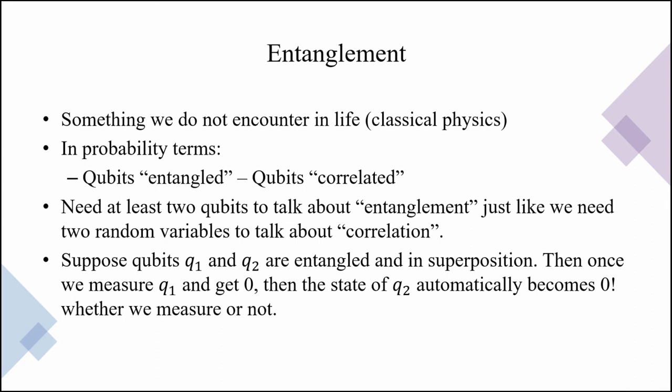I'd like to also mention about one particular peculiar behavior of quantum mechanics called entanglement. This is something we do not encounter in life because of the classical physics where objects are microscopic scale. In a nutshell, qubits are entangled means these qubits are correlated. So we need at least two qubits to talk about entanglement just like we need two random variables to talk about correlation. Suppose qubits q1 and q2 are entangled and they are in superposition. Then once we measure q1 and get zero, then the state of q2 automatically becomes zero. So whether we measure it or not wouldn't matter. In other words, having measured one of them will have to affect the other in a strange way. That is strange that it led Einstein to describe this phenomena as a spooky action at distance. And led to an EPR paradox, which we will later touch upon. So because this behavior can be observed no matter how far away the qubits are.